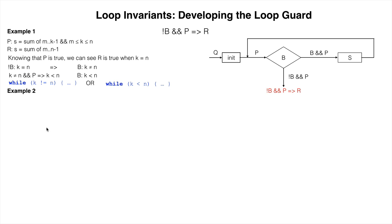Now let's look at a second example. P is: V is the minimum of B sub 0 dot dot K minus 1, and K is at least 0 and at most N.